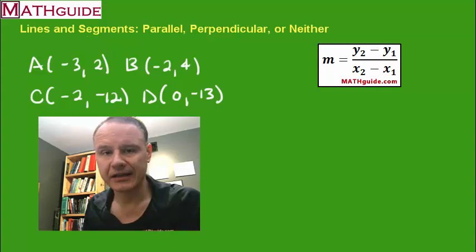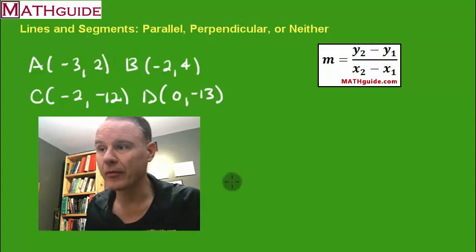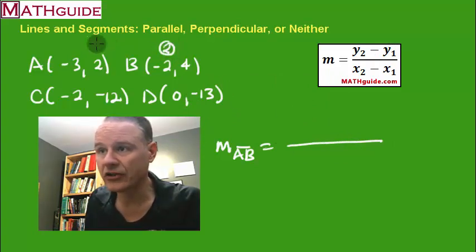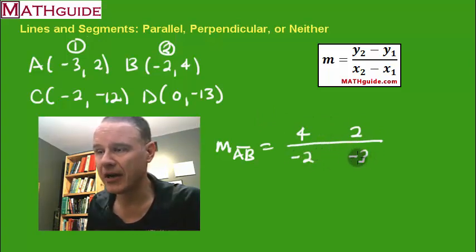Here's our second example. We have new points up here, A(1,2), B(-2,4), C(-2,-12), D(0,-13). So we're calculating a new situation. Same formula. What's the first step? First step is to calculate the slope. So let's get the slope of AB first. So what does the formula say? We're going to put the y values on top. Again, I'm going to call this point 2 and this one point 1. So I'm going to put 4 and 2 in the numerator. Then I'm going to put negative 2 and negative 3 in the denominator.